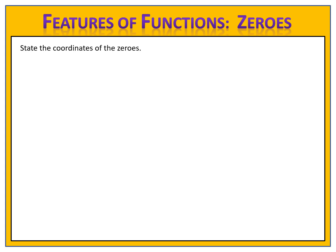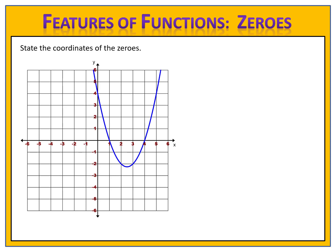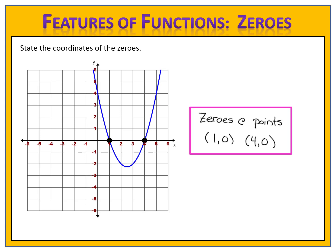Let's take a look at some examples. State the coordinates of the zeros. We're given the graph of a function and we want to state the coordinates of the zeros. We begin by looking along the x-axis and find where the graph intersects at these two points. The first point is (1, 0) — that's the first zero. The second point is (4, 0) — that is the second zero. The points (1, 0) and (4, 0) are the zeros of the function, because that is where the output of the function is zero.